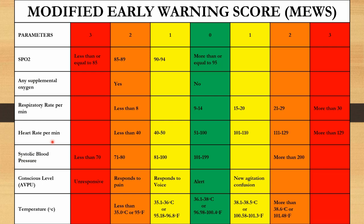The next parameter is heart rate per minute. If the heart rate is between 51 to 100 beats per minute, give a score of 0. If it is between 40 to 50, give a score of 1. If the heart rate is less than 40 beats per minute, give a score of 2. On the other hand, if the heart rate is between 101 to 110 beats per minute, give a score of 1; between 111 to 129, give a score of 2; and if more than 129 beats per minute, give a score of 3.